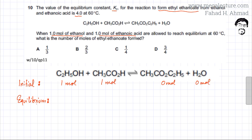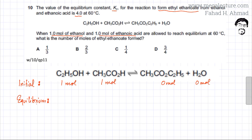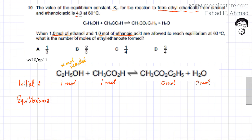At equilibrium, we want to find the number of moles of ethyl ethanoate formed. I have the initial moles but I don't know the equilibrium moles — I don't know how much ethanol actually reacted. So I'm going to assume that x moles of ethanol reacted. Since the ratio of ethanol to ethanoic acid in the equation is 1:1, if x moles of ethanol reacted, then x moles of ethanoic acid would also react.